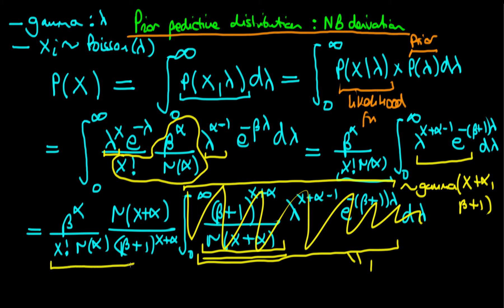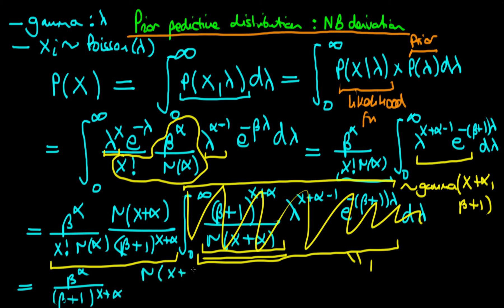What we're left with is the term on the left-hand side. Starting with the bits which involve beta, we've got beta to the power alpha divided through by beta plus 1 all to the power x plus alpha. Then we've got gamma of x plus alpha divided through by x factorial times gamma of alpha.